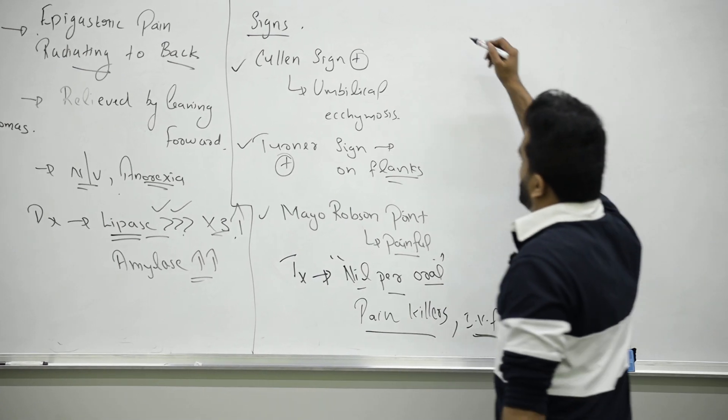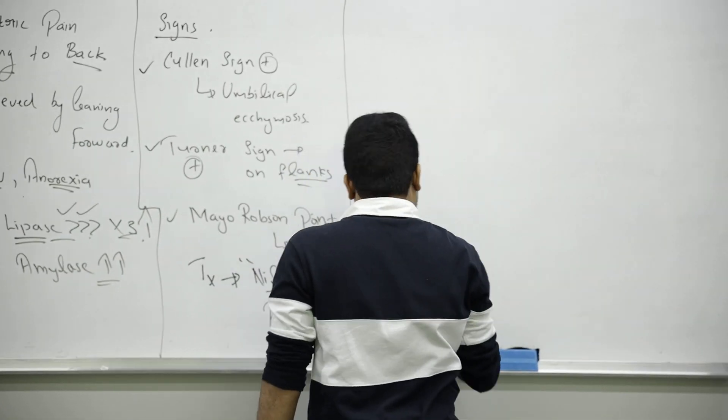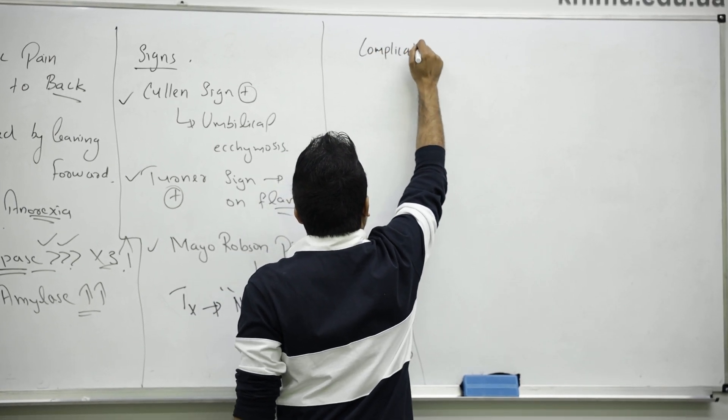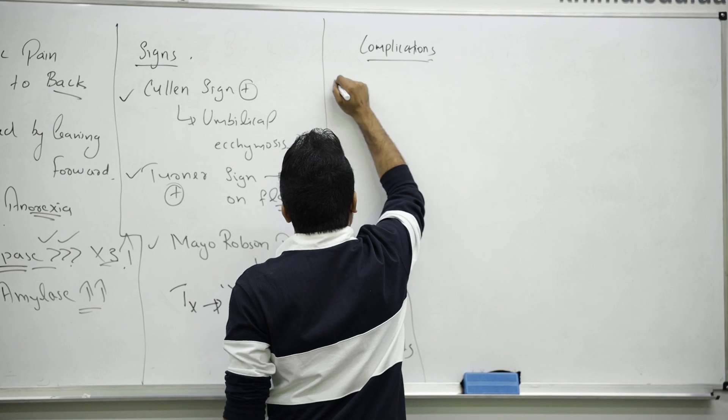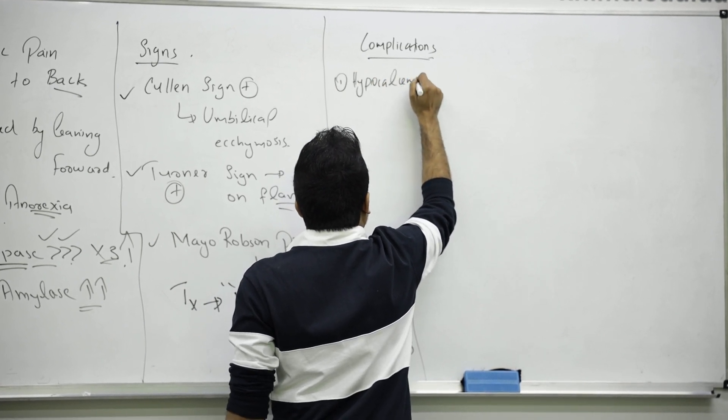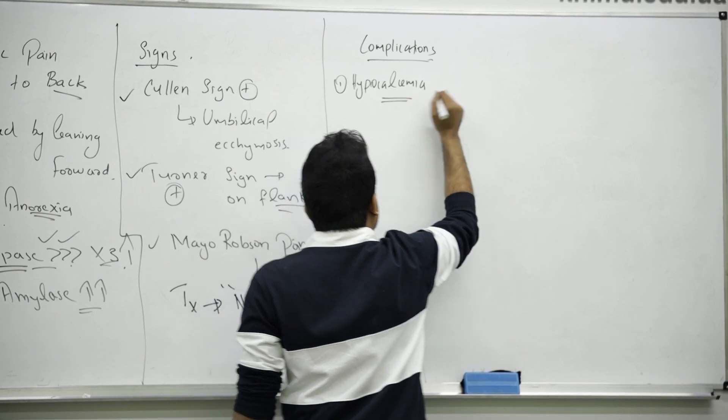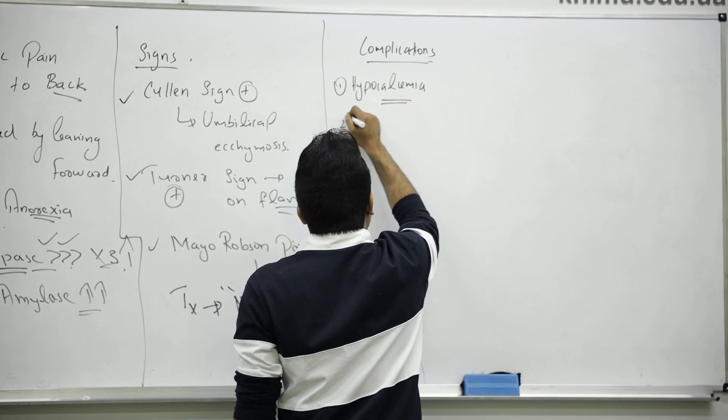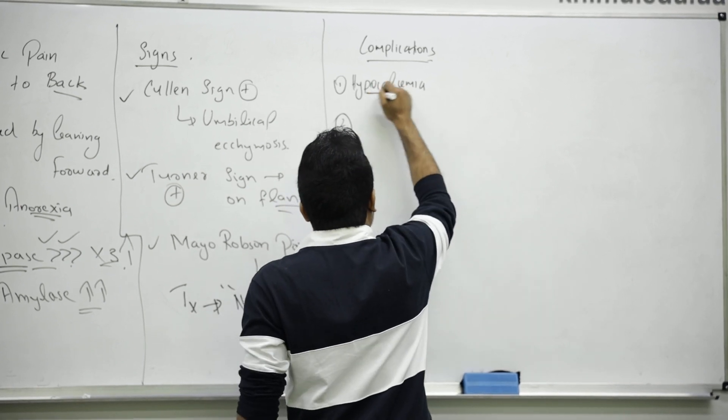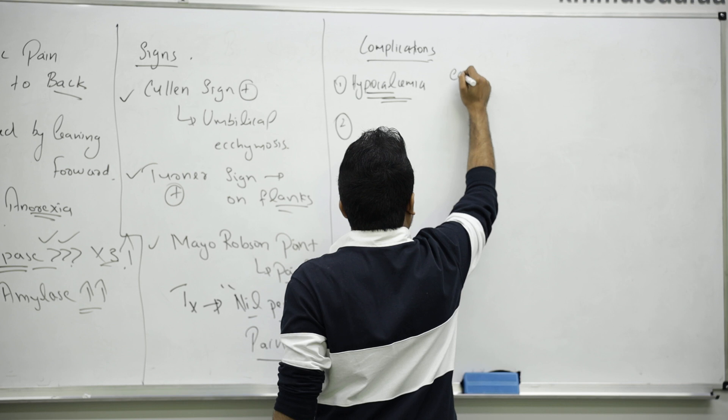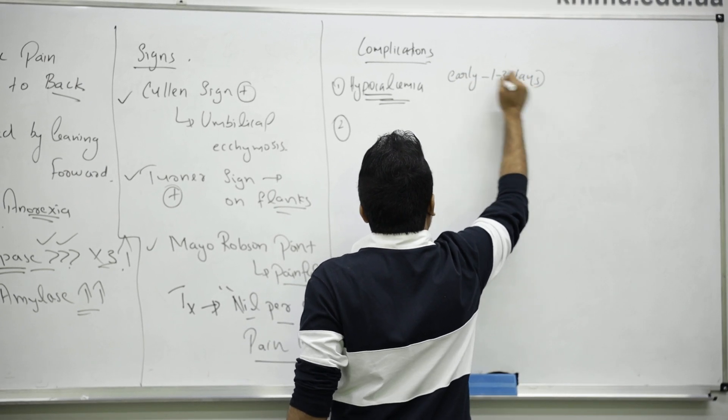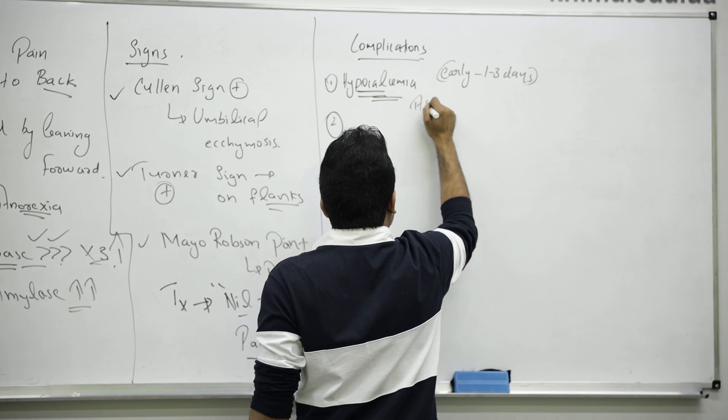If you don't treat pancreatitis, we can have different complications. One of the important ones is hypocalcemia. This is an early complication, early means around one to three days. Along with that, the patient can have ascites.